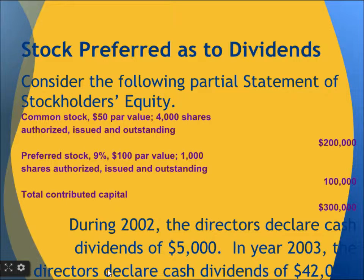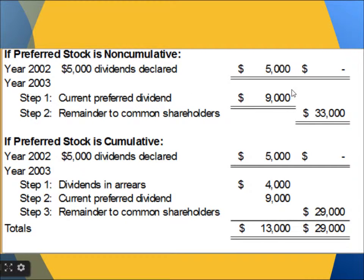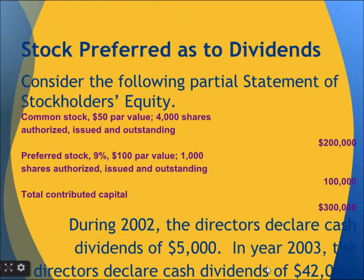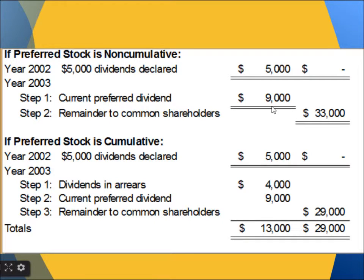In 2003, the dividend declared was $42,000 in cash, which is more than $9,000. So first $9,000 will go to the preferred stockholders. $42,000 minus $9,000 is $33,000. The remaining $33,000 after giving the preferred stockholders their $9,000 is given to the common stockholders. This is in case of non-cumulative.